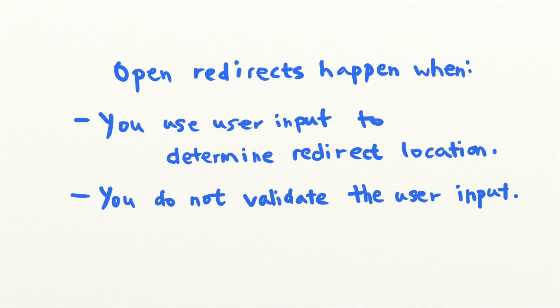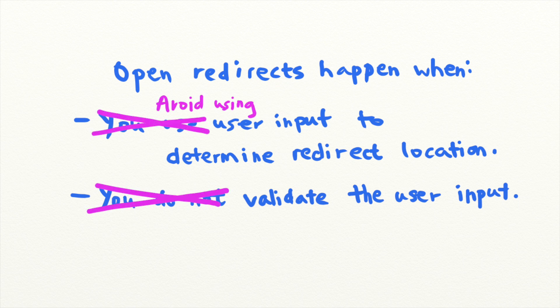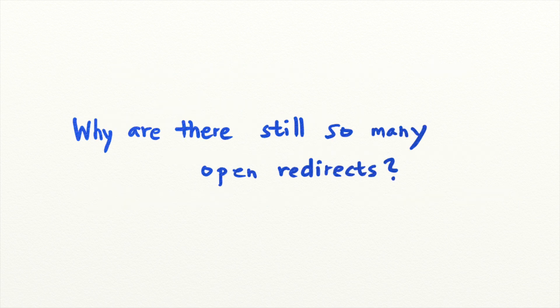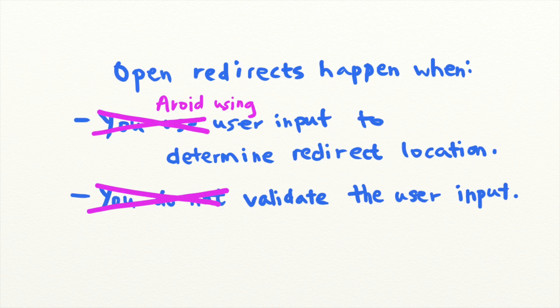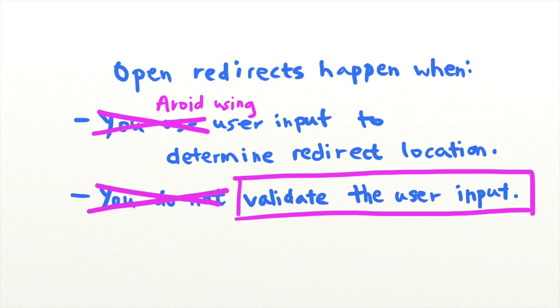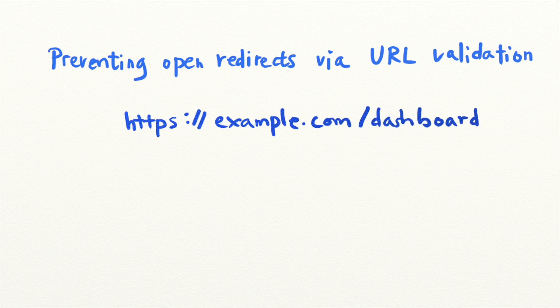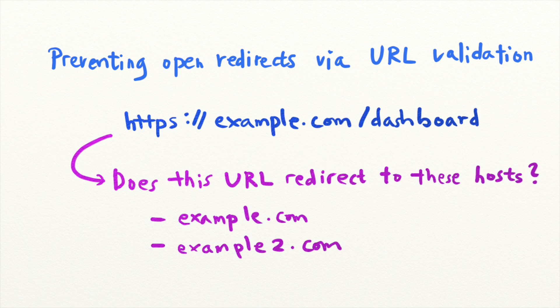Welcome back to Security Simplified. Last time, we talked about Open Redirect vulnerabilities and how you can prevent them from showing up in your applications. Today, let's take a deeper dive into Open Redirects and explore why it's so prevalent in web applications today. Sites can prevent Open Redirects by validating the user-supplied URL used to redirect the user. They could check the URL against a whitelist of hosts and trusted URLs and reject anything that does not belong to those locations.